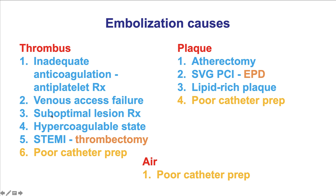Another cause of thrombus formation is suboptimal lesion treatment. For example, stent underexpansion can lead to thrombus formation, as can a hypercoagulable state or presentation with an acute coronary syndrome such as ST elevation myocardial infarction. In many of those patients, if there is a large thrombus, thrombectomy is performed.